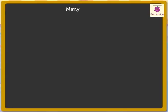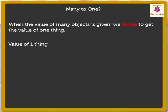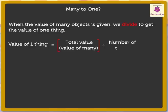What do we mean by many to one? When the value of many objects is given, we divide to get the value of one thing. Thus, value of one thing is equal to total value, that is, value of many divided by number of things.